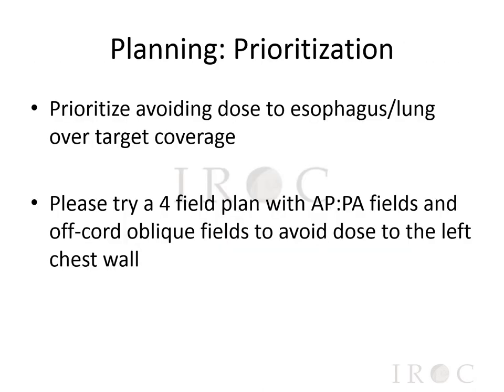In addition to the numeric constraints, the radiation oncologist can tell the dosimetrist to prioritize avoiding dose to the esophagus and lung over ensuring complete target coverage. They might also suggest a beam arrangement — for example, please try a four-field plan with APPA fields and off-cord oblique fields to avoid dose to the left chest wall. This will allow the dosimetrist to make an initial pass of the plan that is most in keeping with the radiation oncologist's vision.